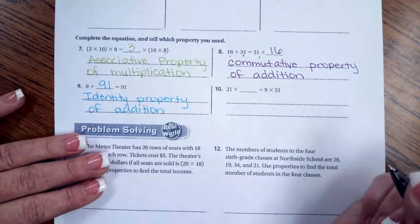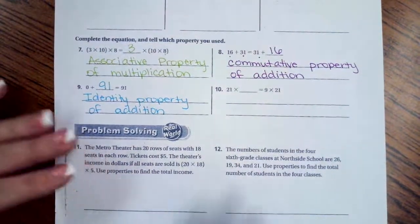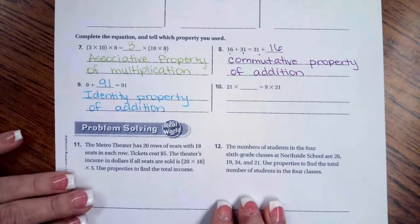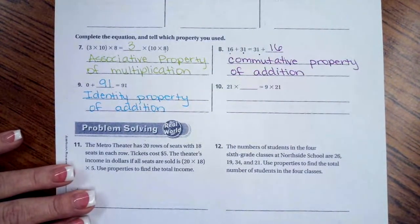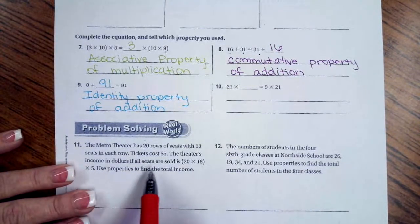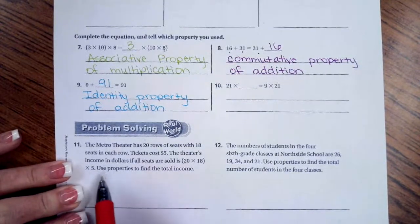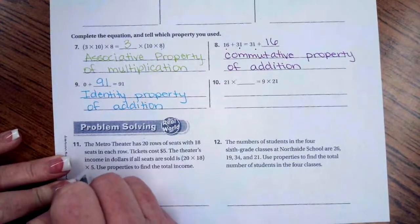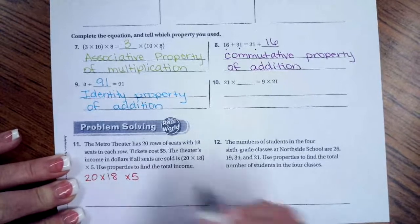So you guys go ahead and do number 10. You guys can totally do that. Look at some of the others for an example. And we're going to go down and do number 11. Number 11 says the Metro Theater has 20 rows of seats with 18 seats in each row. The tickets cost $5. The theater's income in dollars, if all the seats are sold is 20 times 18 times 5. Use the properties to find the total income.